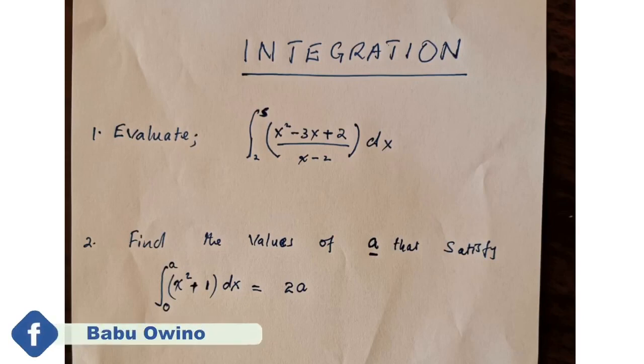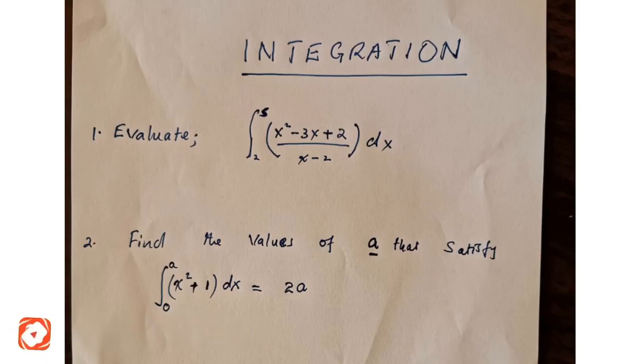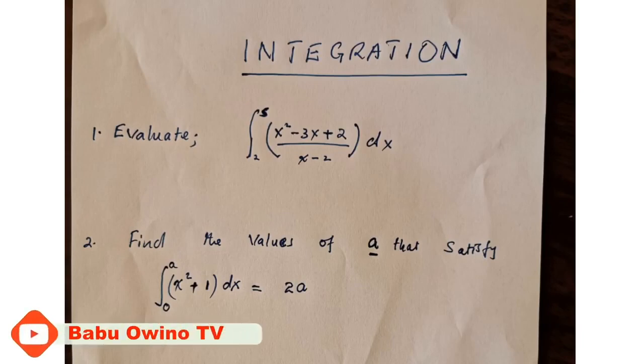So question number 11. You are told to integrate. This sign means integration with limits of 5 and 2. So integrate x squared minus 3x plus 2 divided by x minus 2 with reference to dx.